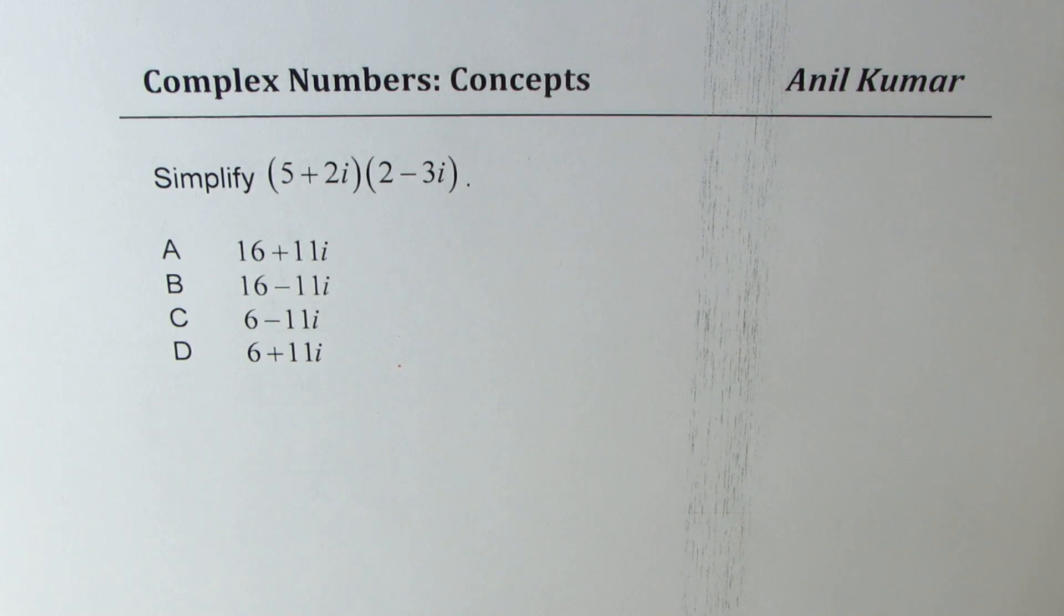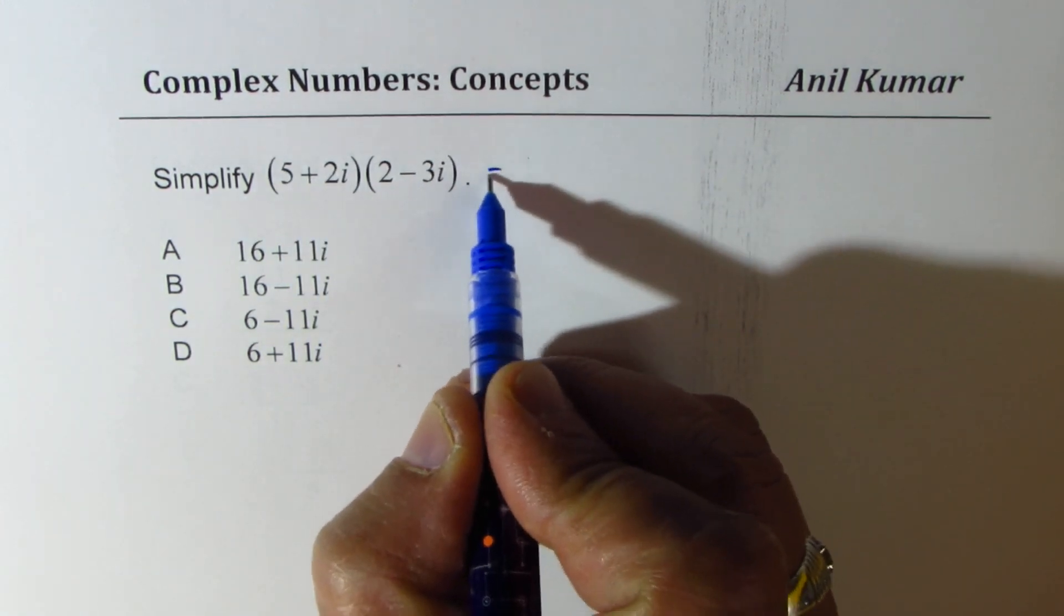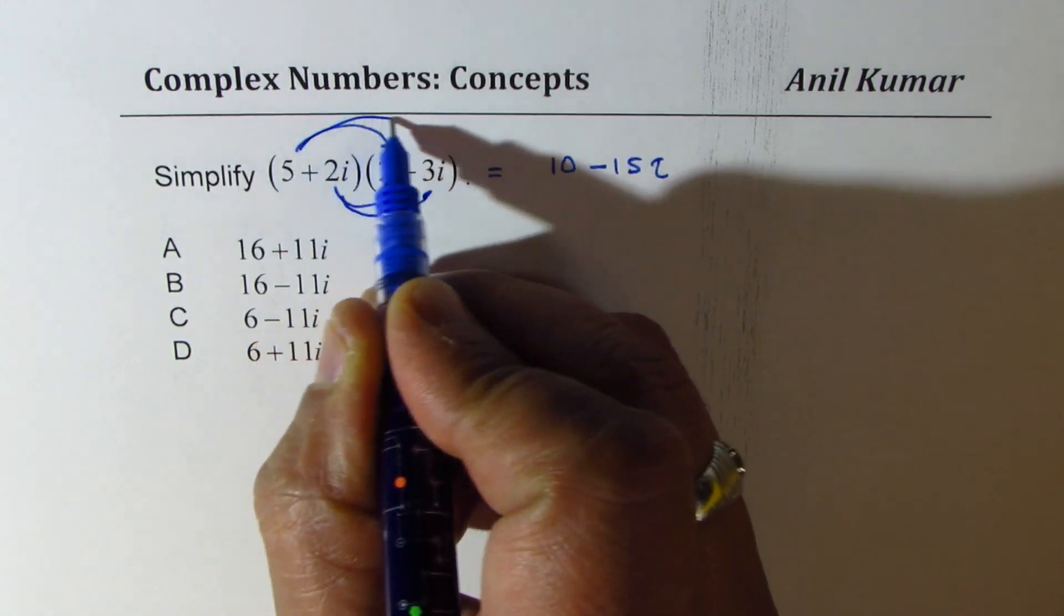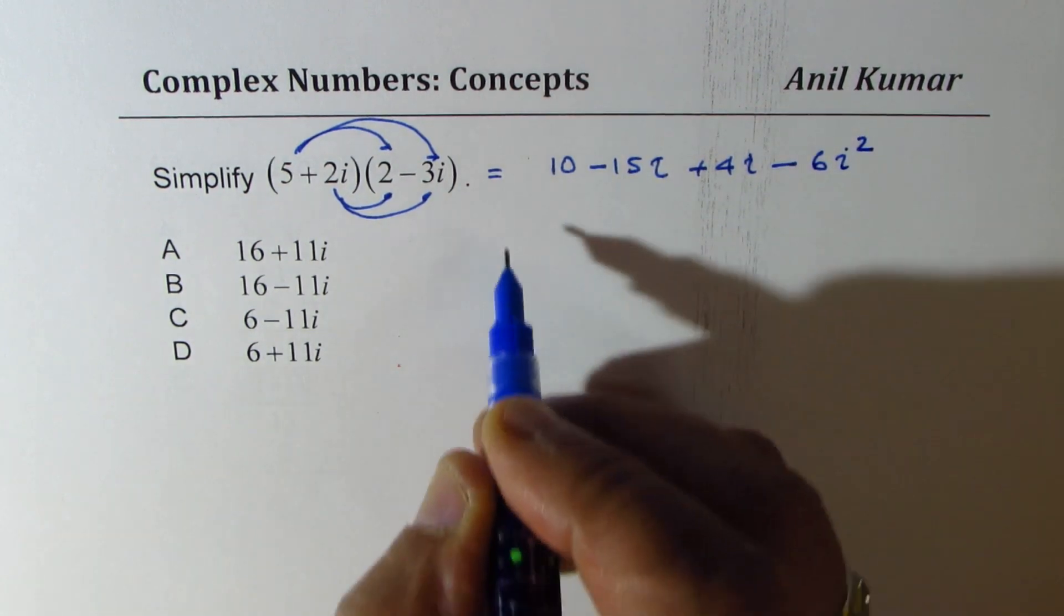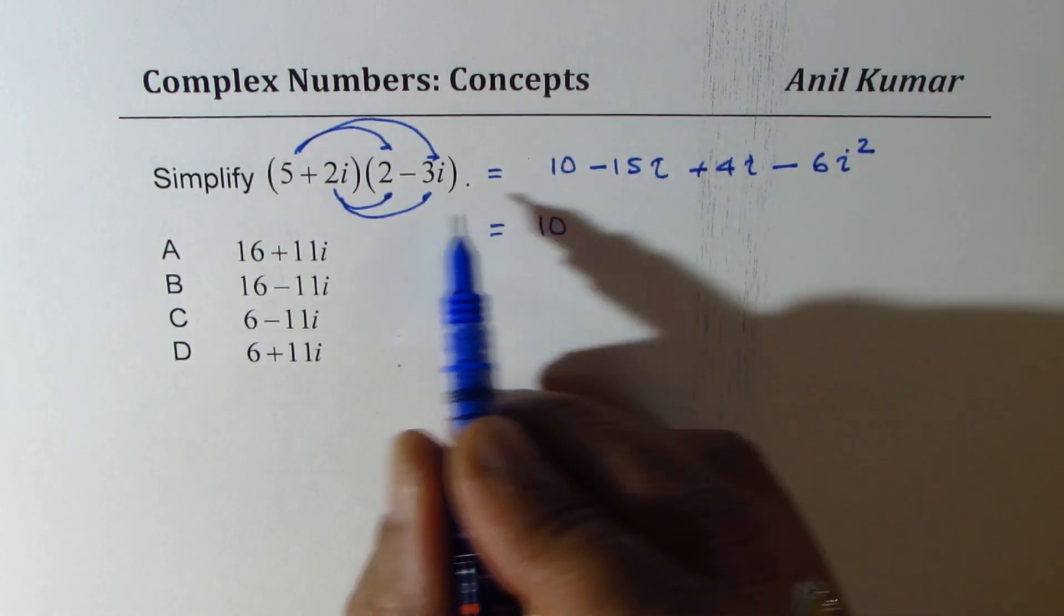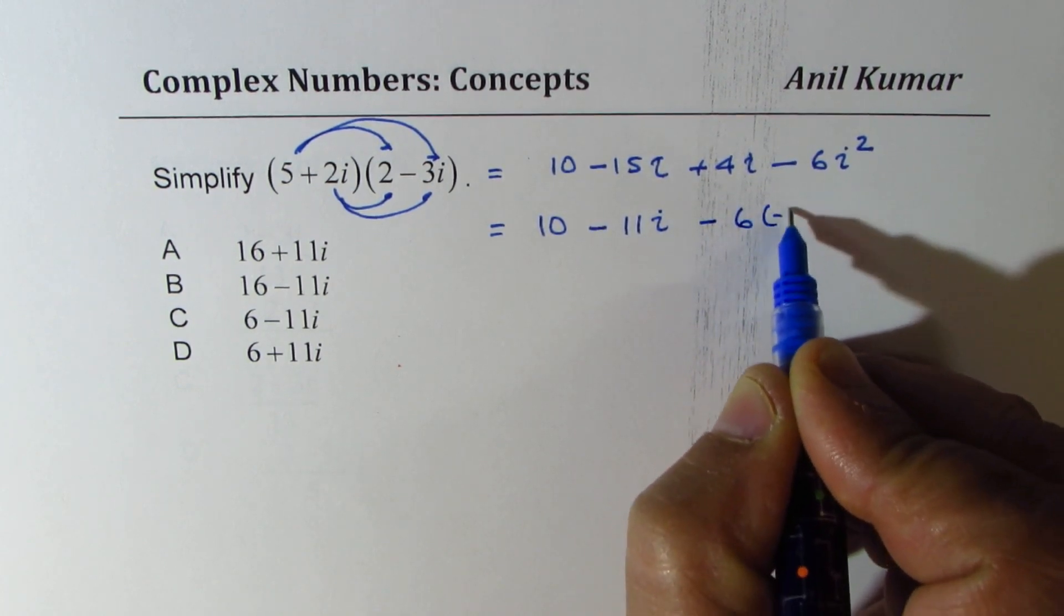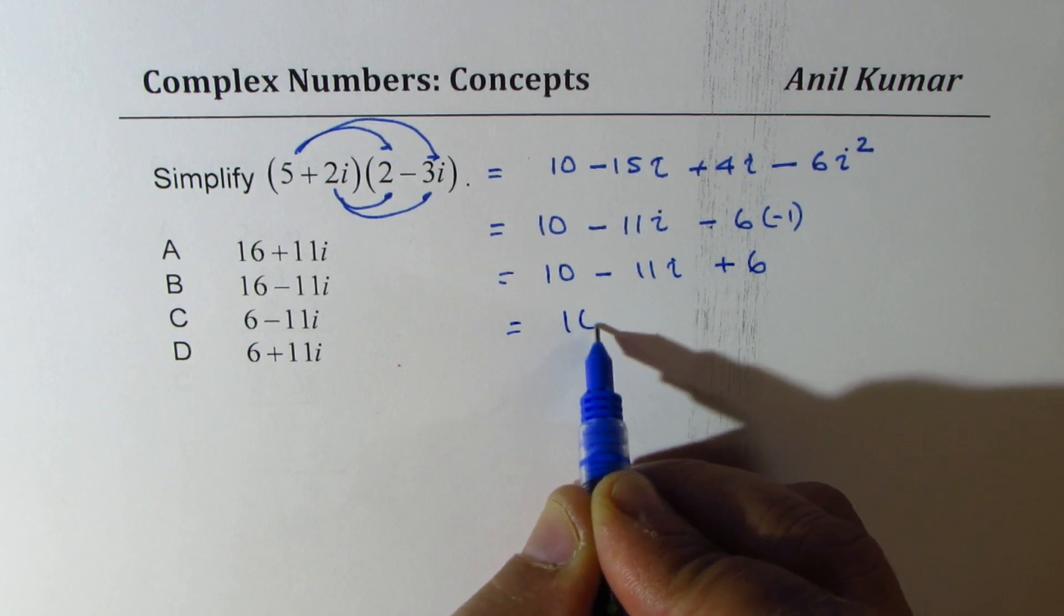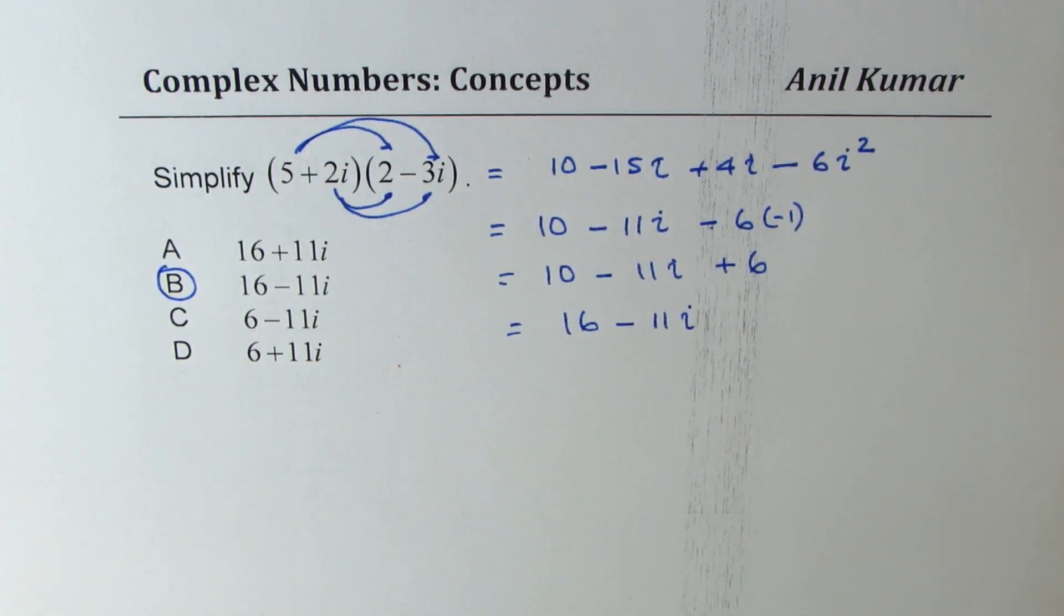Now we will see how to multiply terms with complex numbers: 5 plus 2i times 2 minus 3i. So we just have to expand. Multiply by 5 first, we get 10 minus 15i, and then with 2i both terms, we get plus 4i minus 6i squared. Now we could write this as 10 minus 15 plus 4 gives us minus 11i, and i squared is negative, so this becomes 16 minus 11i. So option b is the right option.